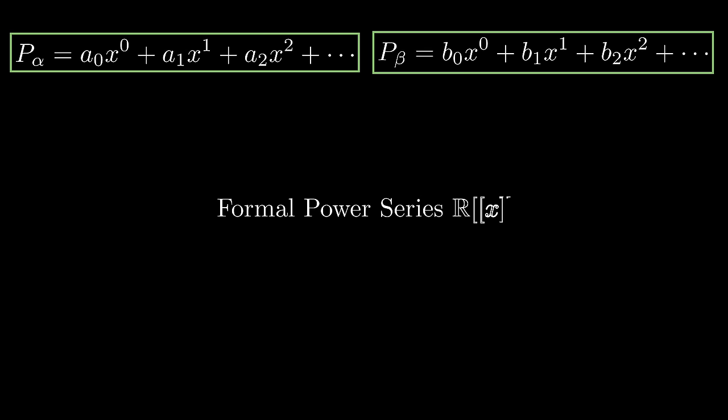Consider the following two expressions. X is just a symbol, and for simplicity, we think a_n and b_n are real numbers. We can somewhat think of them as generalized or extended polynomials such that the orders can go to infinity. This expression has a name, the formal power series.